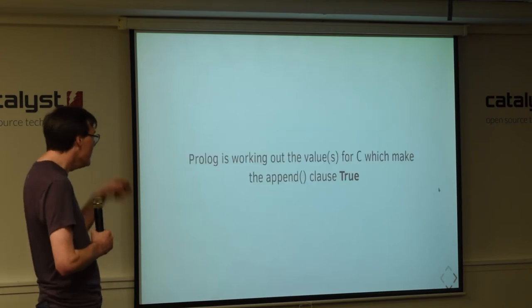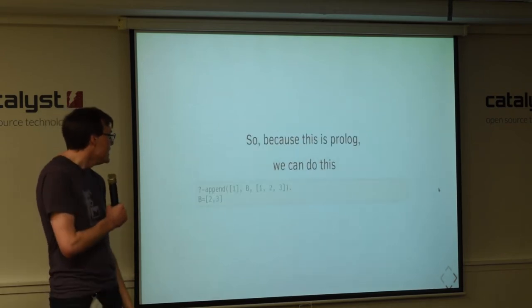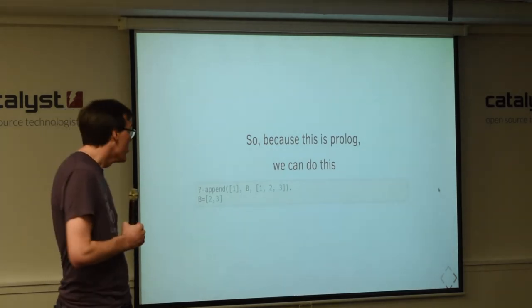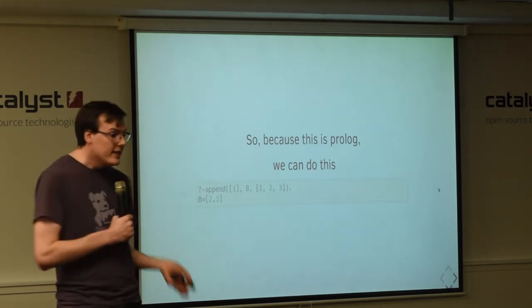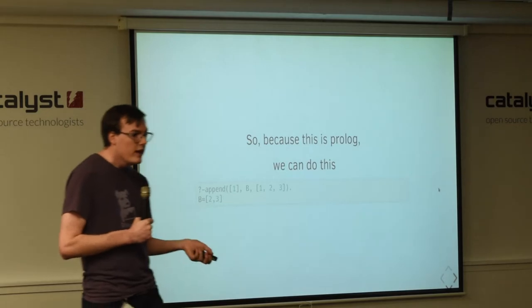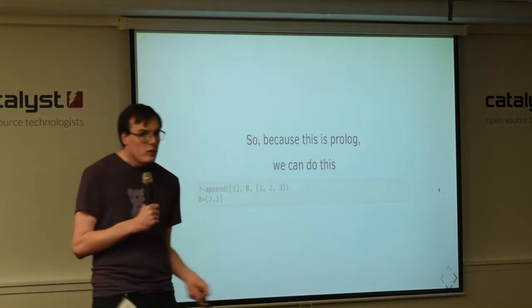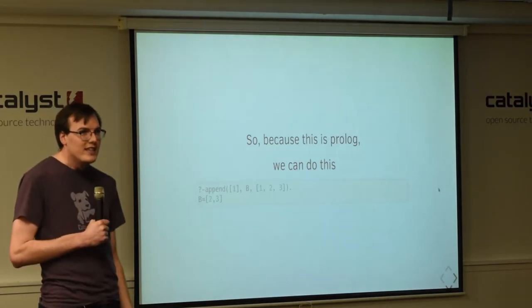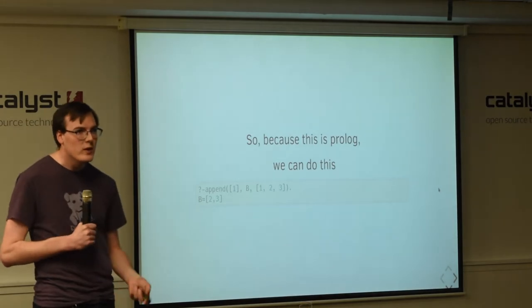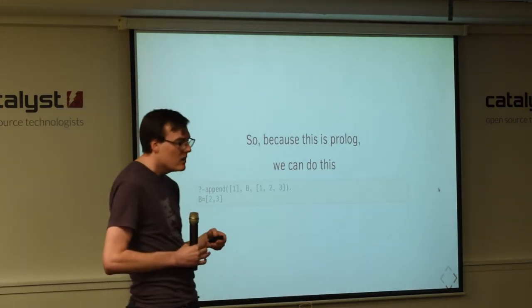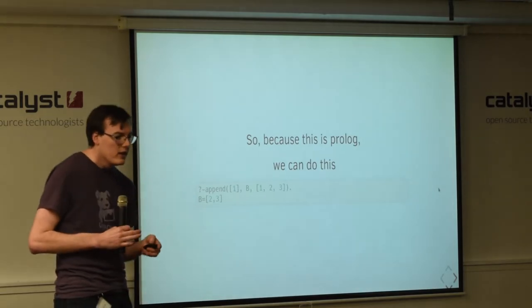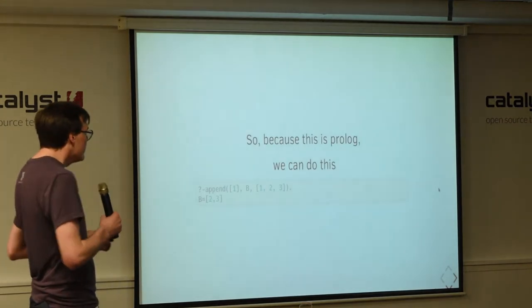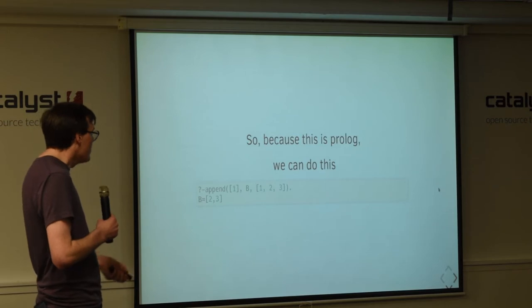And so, because this is prologue, we can also do this, where instead of providing a variable for c, we can provide a list there and ask it what do we need to provide for b to make this fact true. And so, this is where my brain really starts to hurt, but also where prologue becomes wonderful, because you stop thinking of things linearly, and you start to really understand that all it's doing is trying to make the fact true, and it does a lot of the work under the hood for you.